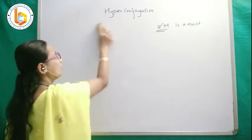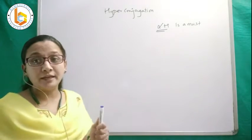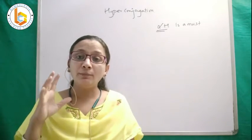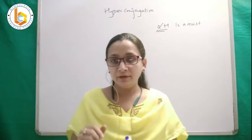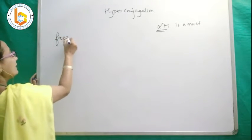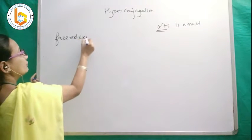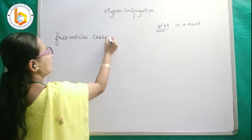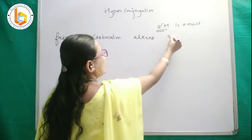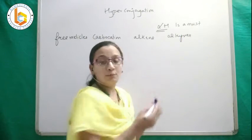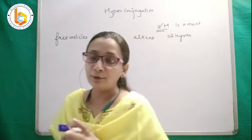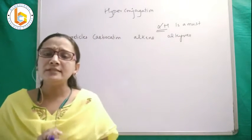The next thing about hyperconjugation — in which examples do we categorically see it? We will be talking about hyperconjugation with respect to free radicals, with respect to carbocations, with respect to alkenes, and with respect to alkynes. These are the four places where we observe hyperconjugation.